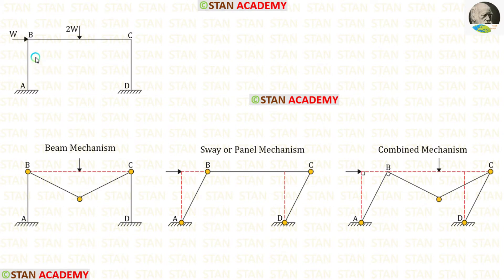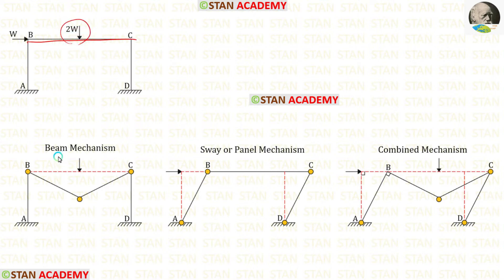Since in the columns there are no loads, there will be no column mechanism. In the beam we have a point load, so there will be a beam mechanism. Additionally we will have a sway mechanism and a combined mechanism.